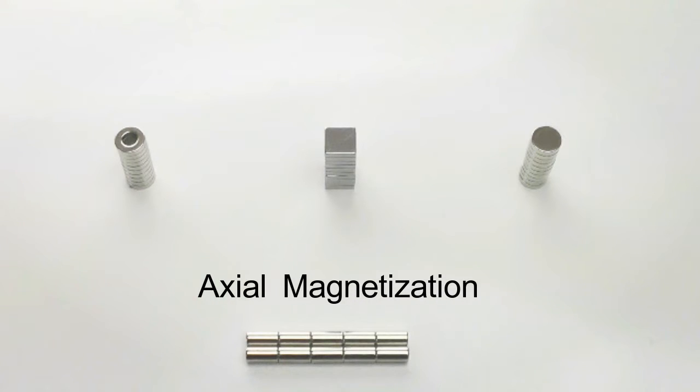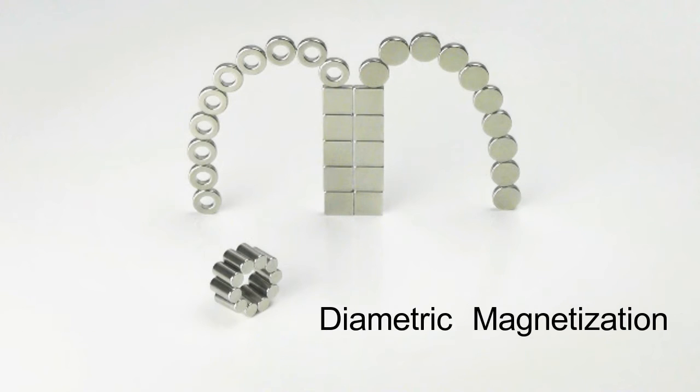Axial magnets attract each other toward their largest flat surfaces. Diametric magnets are attracted to a smaller or rounded surface.